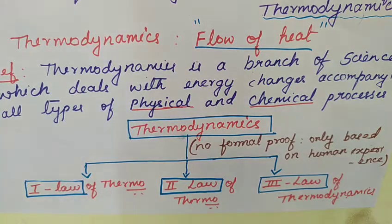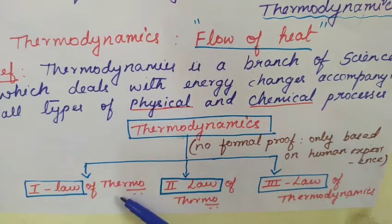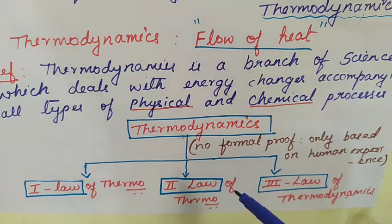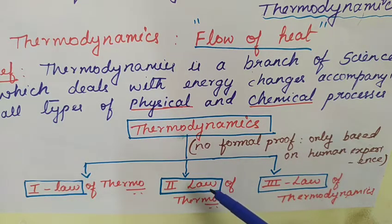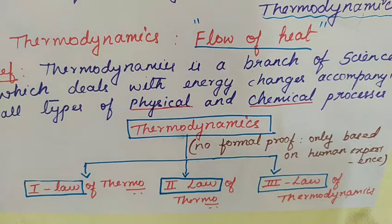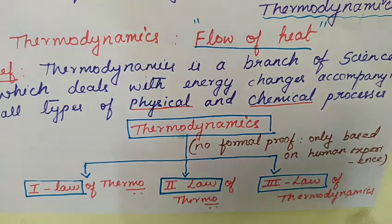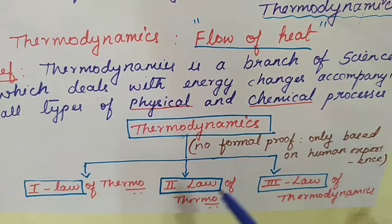Thermodynamics depends on two important generalizations: the first law and the second law of thermodynamics. Apart from this, we also have the third law and the zeroth law of thermodynamics, which are in turn derived from the second law. That is why thermodynamics mainly depends on the two important generalizations — the first and second law. There is absolutely no formal proof for these laws; they are only based on human experience.